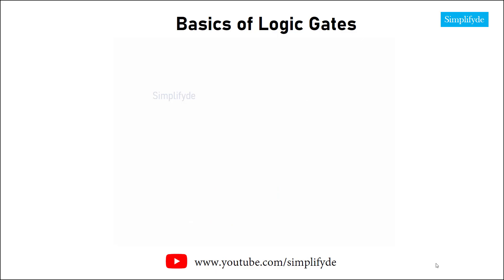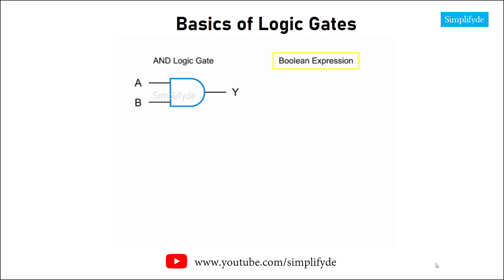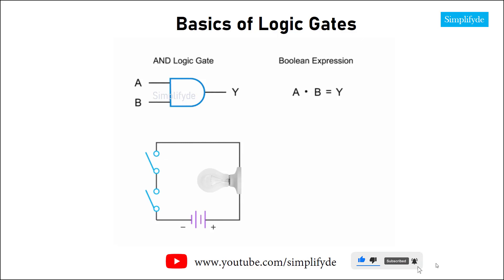The first one is the AND gate. It's represented by this symbol. You have two inputs, A and B, and output Y. It can also be written using a Boolean expression A dot B equals Y. Keep in mind that the multiplication dot in Boolean algebra is used to symbolize AND. Another way to view the AND logic gate and its operations is with a simplified circuit, with the A and B switches representing the circuit terminals of the AND gate. The Y, or output, is depicted by the ON or OFF state of a lightbulb. Let's observe how logical inputs to this circuit affect the logical output.